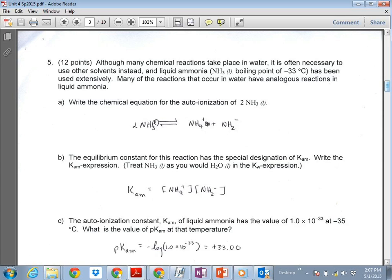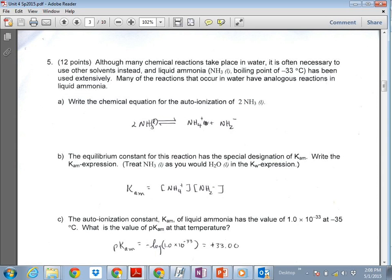So from that, then, you could answer B. So some of these were related. So the KAM, K of ammonia, so the KW is KAM, would be basically the molar concentrations of these times each other. And then given the KAM, a value of 1.0 times 10 to the negative 33rd at that given temperature, what would the pKAM of that be? So basically, you're going to apply the p function to the negative log of that. And get plus 33.00.